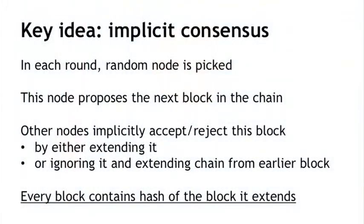So let's make this assumption for now and see what becomes possible. Here's the key idea: what becomes possible under this assumption of random node selection is something called implicit consensus. In each round — and there are going to be multiple rounds, each round corresponding to a different block in the blockchain — a random node is somehow selected, and this node gets to propose the next block in the chain. There is no consensus algorithm, there is no voting. This node simply unilaterally proposes what the next block in the blockchain is going to be.